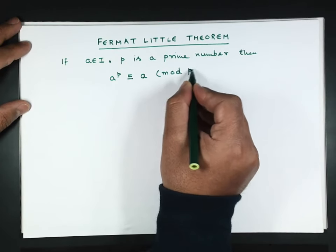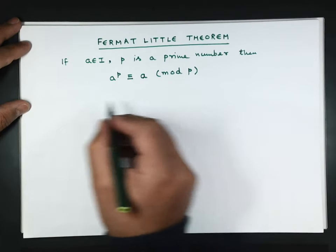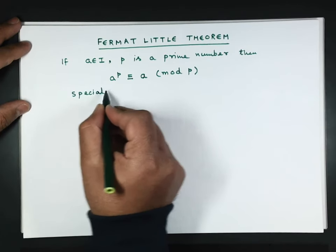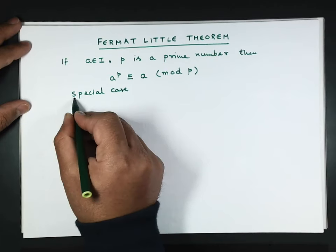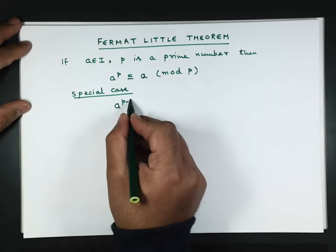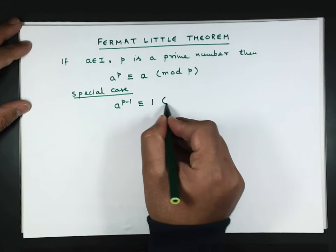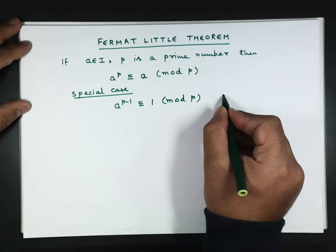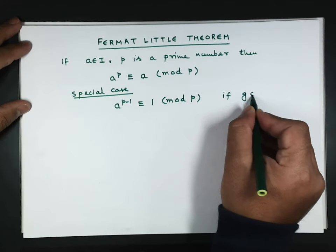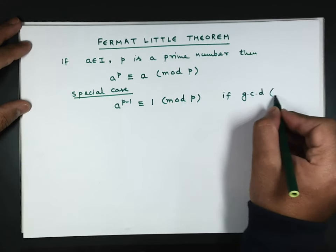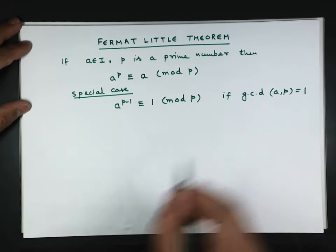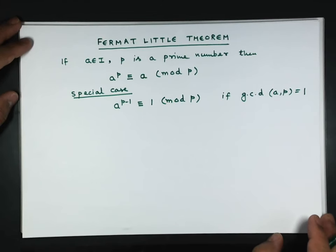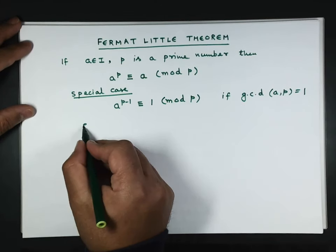In a special case, this becomes a^(p-1) ≡ 1 (mod p) if gcd(a,p) = 1, that means a and p are co-prime numbers.